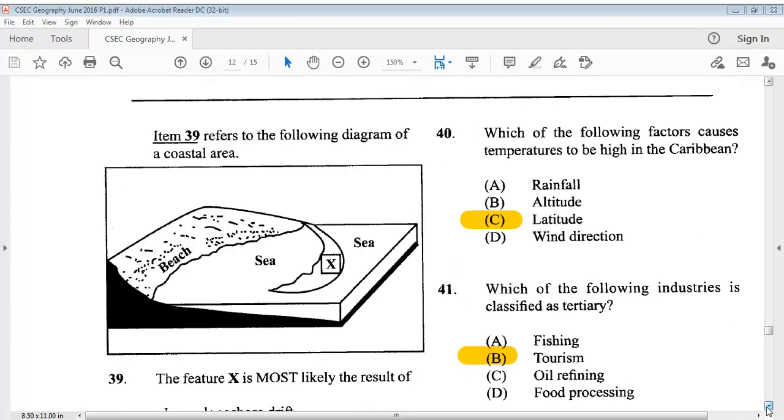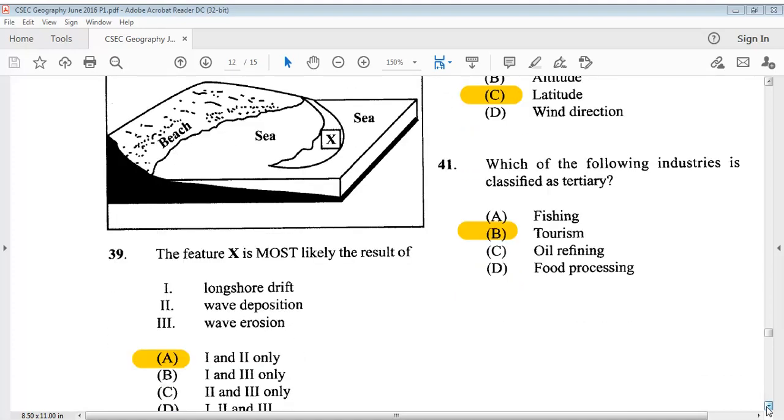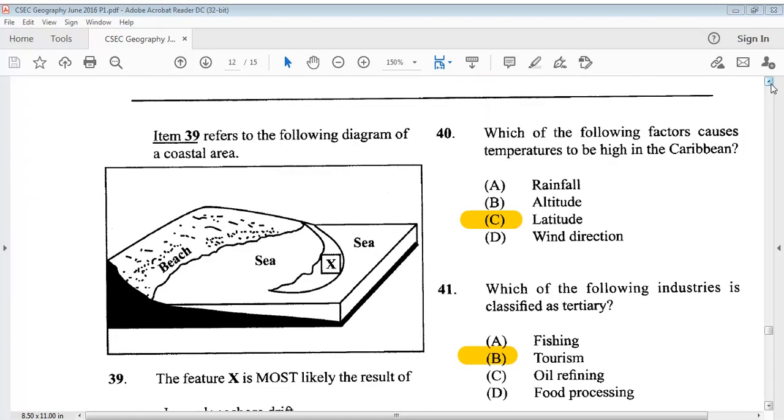Item 39 refers to the following diagram of a coastal area. The feature X is most likely the result of 1, longshore drift, 2, wave deposition, 3, wave erosion. The answer is A, 1 and 2 only. Question 40 says, which of the following factors causes temperatures to be high in the Caribbean? C, latitude.